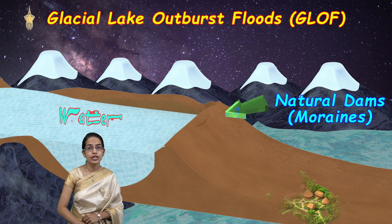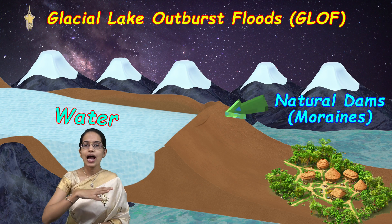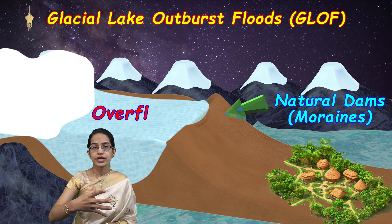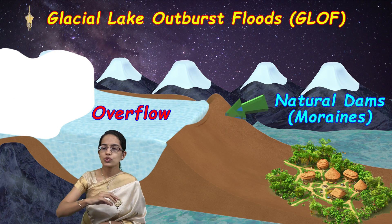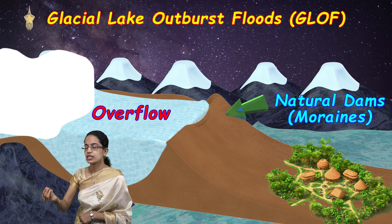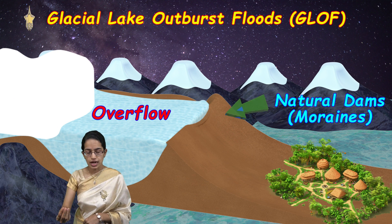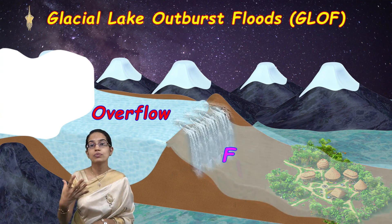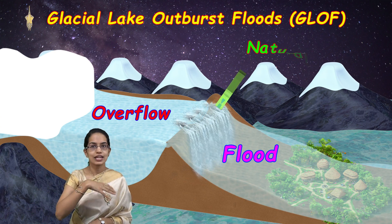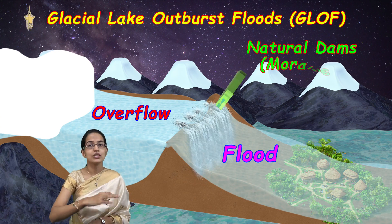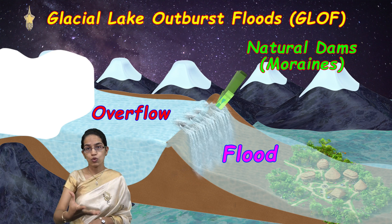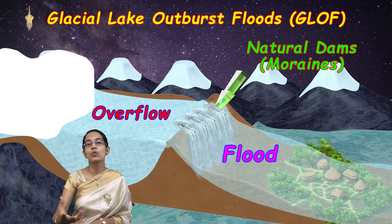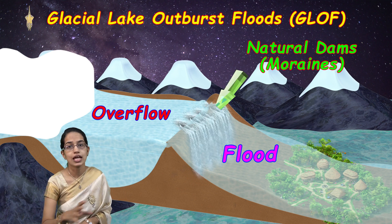These moraine natural dams help retain water. However, when there is an overflow of this water — due to various reasons we will discuss — it can lead to an outburst flood. If these moraine dams are either overflowed or punctured, it could lead to extreme floods and devastation of civilizations at lower elevations.